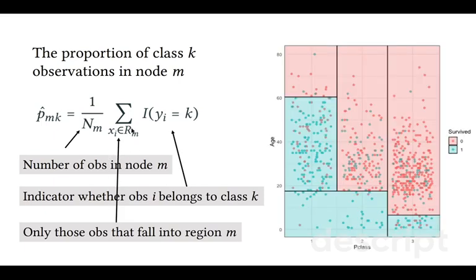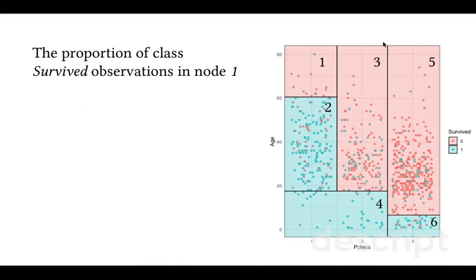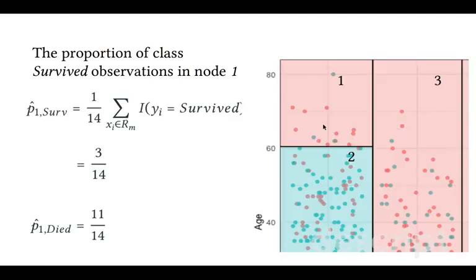So if we return back to the Titanic data example, we have six partitions in this example. And for example we want to measure the proportion of class survived observations in node 1. In node 1 we have 14 observations and three of them have survived.